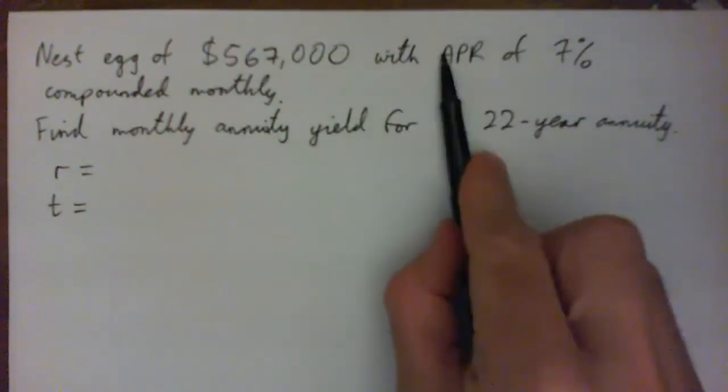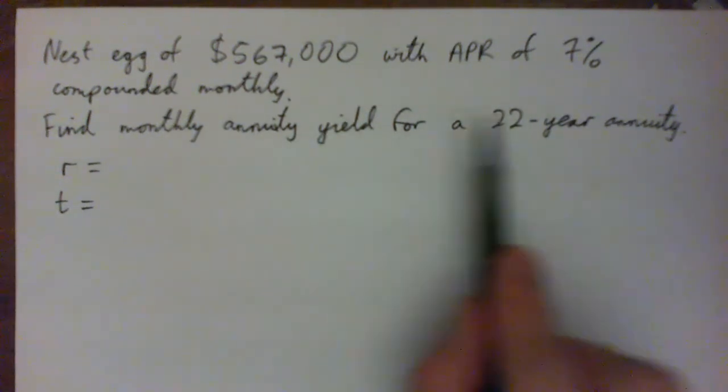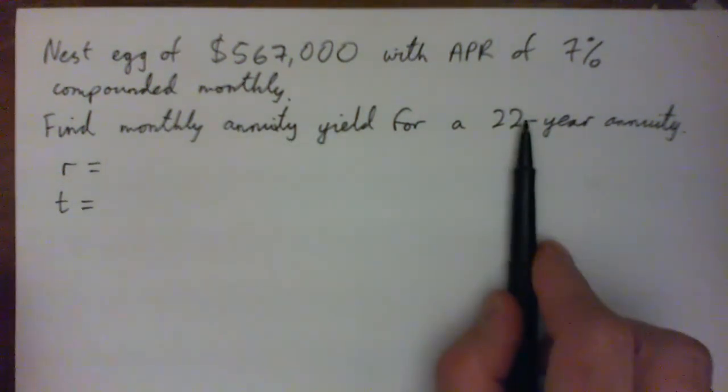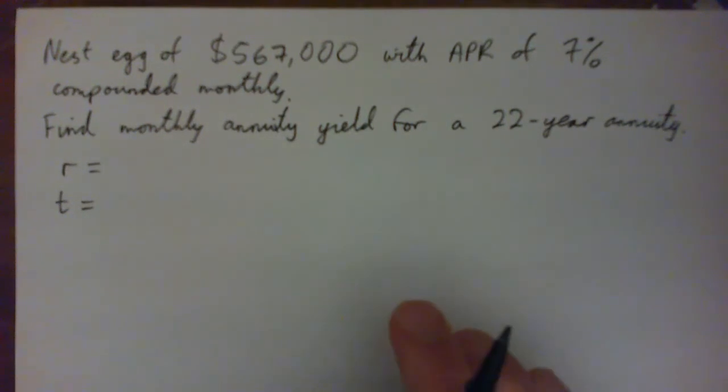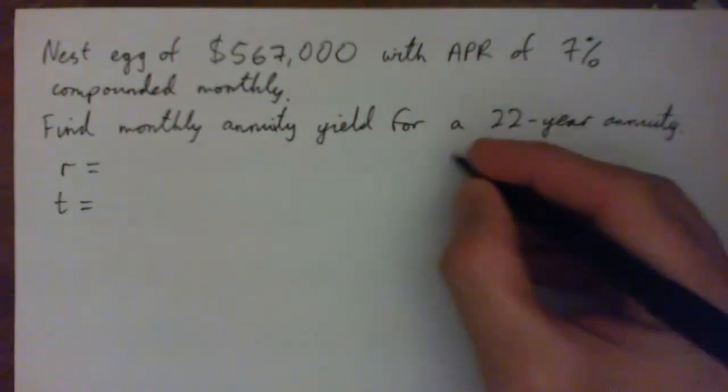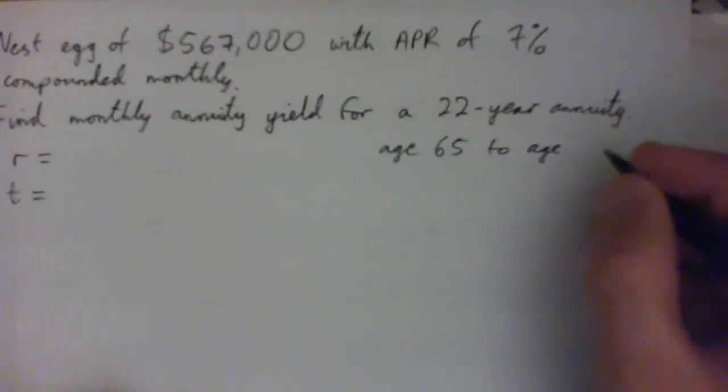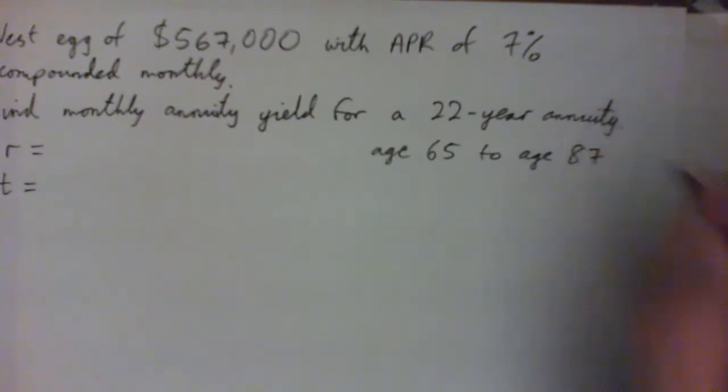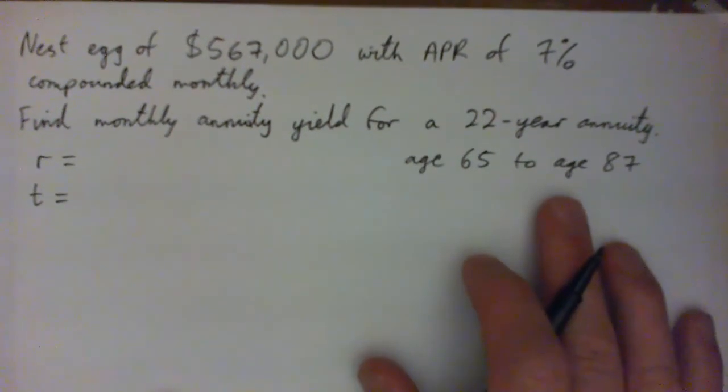And it pays an APR of 7% compounded monthly. Find the monthly annuity yield for a 22 year annuity. So in other words, if you are retired for 22 years, let's say something like age 65 to age 87, so you expect that you will need the money until age 87, what would it pay?